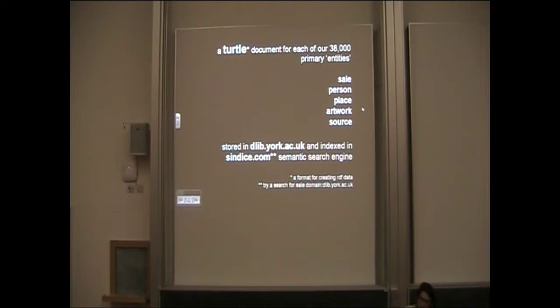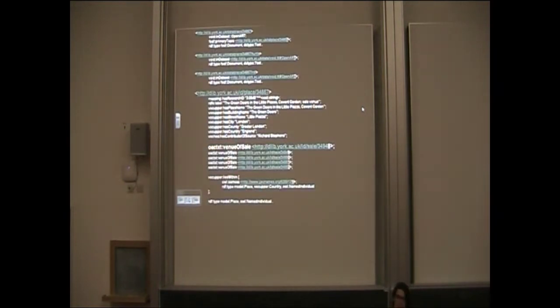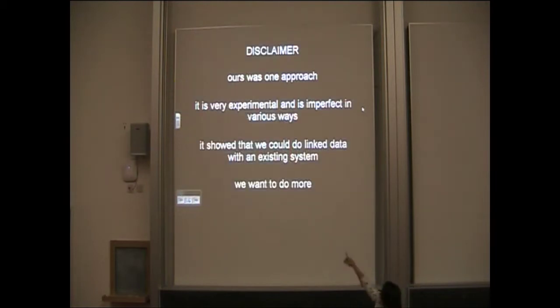We used a document format called Turtle, which is just a way of expressing RDF. It's much simpler than the RDF XML format. There are about 40,000 documents for these different entities—sales, people, places, artworks, and sources. We put all of those documents in our digital library and indexed them in something called Sindice, which is a semantic web search engine. This is just an example document to show that you've got a subject, a predicate, and an object. And this is where the linking comes in at the end.